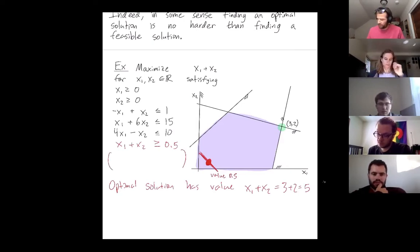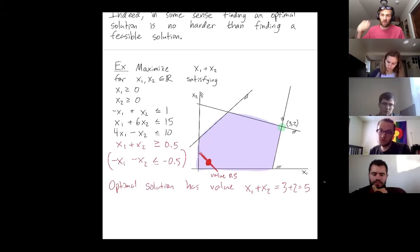You could write this as negative x1 minus x2. Flip the sign of the inequality is at most negative 0.5. And I'm just saying that because sometimes when we write Ax is at most b, we want all these inequalities to be less than equal ones.